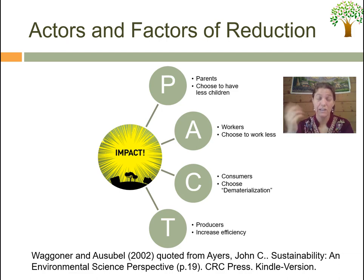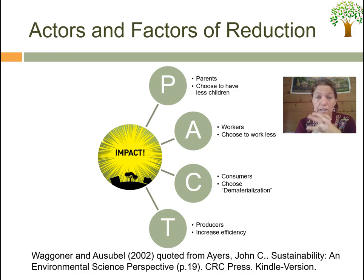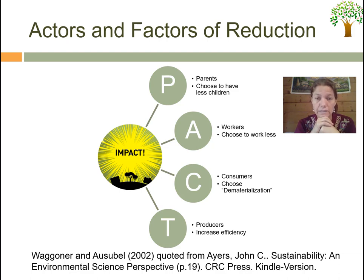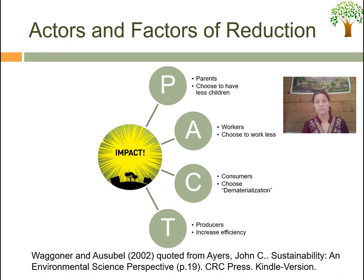Looking at actors and factors in reduction: for population, it is the parents who choose to have fewer children — something we will explore in another chapter. For A, affluence, it would be workers who choose to work less, reducing income — counter to the current system but theoretically valid. C involves consumers who choose to dematerialize. T involves producers — including sport, culture, and event management managers — who try to increase efficiency and reduce total impact.